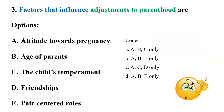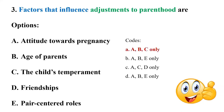Coming back to our question about factors influencing adjustment to parenthood: by simply eliminating friendship and pair-centered roles, we get the correct answer — code A: capital A, B, C — which is attitude towards pregnancy, age of parents, and child's temperament only.